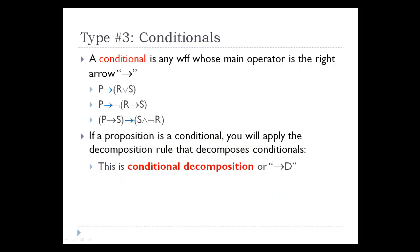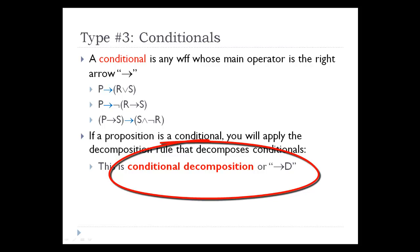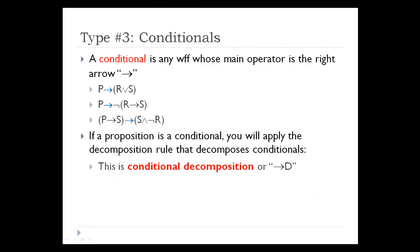Now looking at conditionals, there's something worth pointing out. When we looked at conjunctions and disjunctions, we said we see a formula, we classify it as a conjunction, and the corresponding rule is conjunction decomposition; for disjunctions, disjunction decomposition. The same thing will be true for conditionals and biconditionals. A conditional is any well-formed formula whose main operator is the right arrow. Looking at three formulas, each one has the main operator as the right arrow. We can identify these as conditionals, and the corresponding rule for decomposing them in a truth tree will be conditional decomposition.